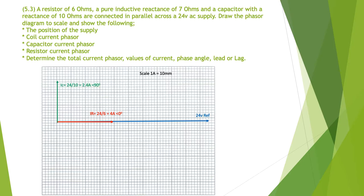The next thing we do is put in the current for the capacitor. We've got the capacitor at 10 ohms. So 24 divided by 10 is 2.4 amps. We scale in 2.4 amps at 90 degrees lead for our capacitor current.